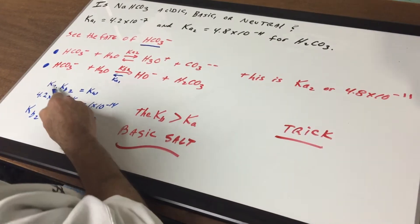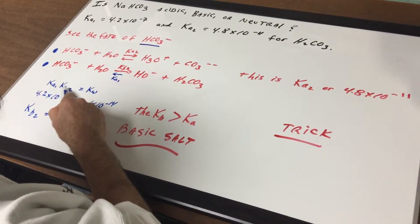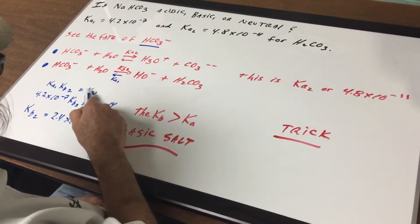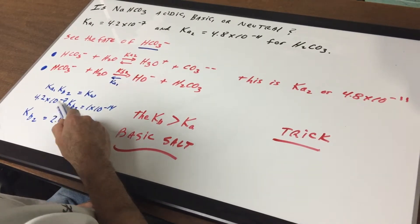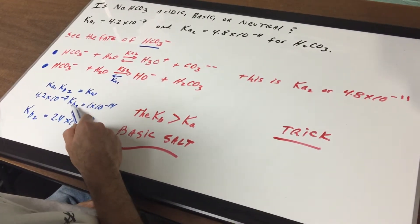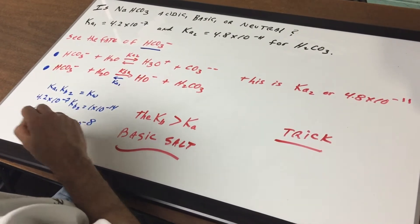All right, that's a little tricky. So that means that Ka1 times KB2 equals Kw. Plugging in for Ka1 of 4.2 times 10^-7 times KB2 equals 1 times 10^-14, that gives me my KB2.